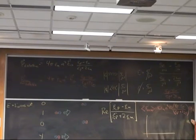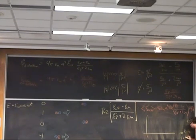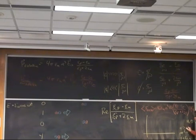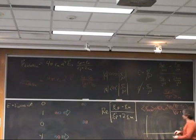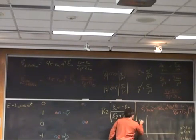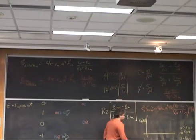I have some water and then I have a particle inside it. My particle has a permittivity that's less than the permittivity of water, but my particle has a conductivity that's greater than the conductivity of water. So let's graph out what the real part of all this looks like as a function of omega.